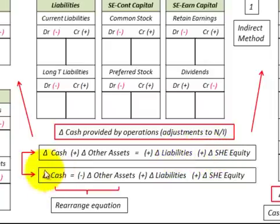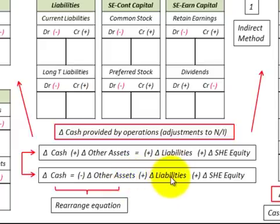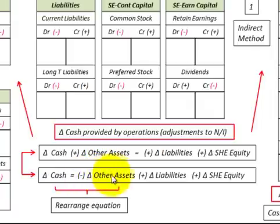Rearranging this equation, the change in cash equals — moving other assets to the other side — minus the change in other assets, plus liabilities, plus stockholders' equity. We're going to be looking at cash provided by operations in terms of this rearranged accounting equation.